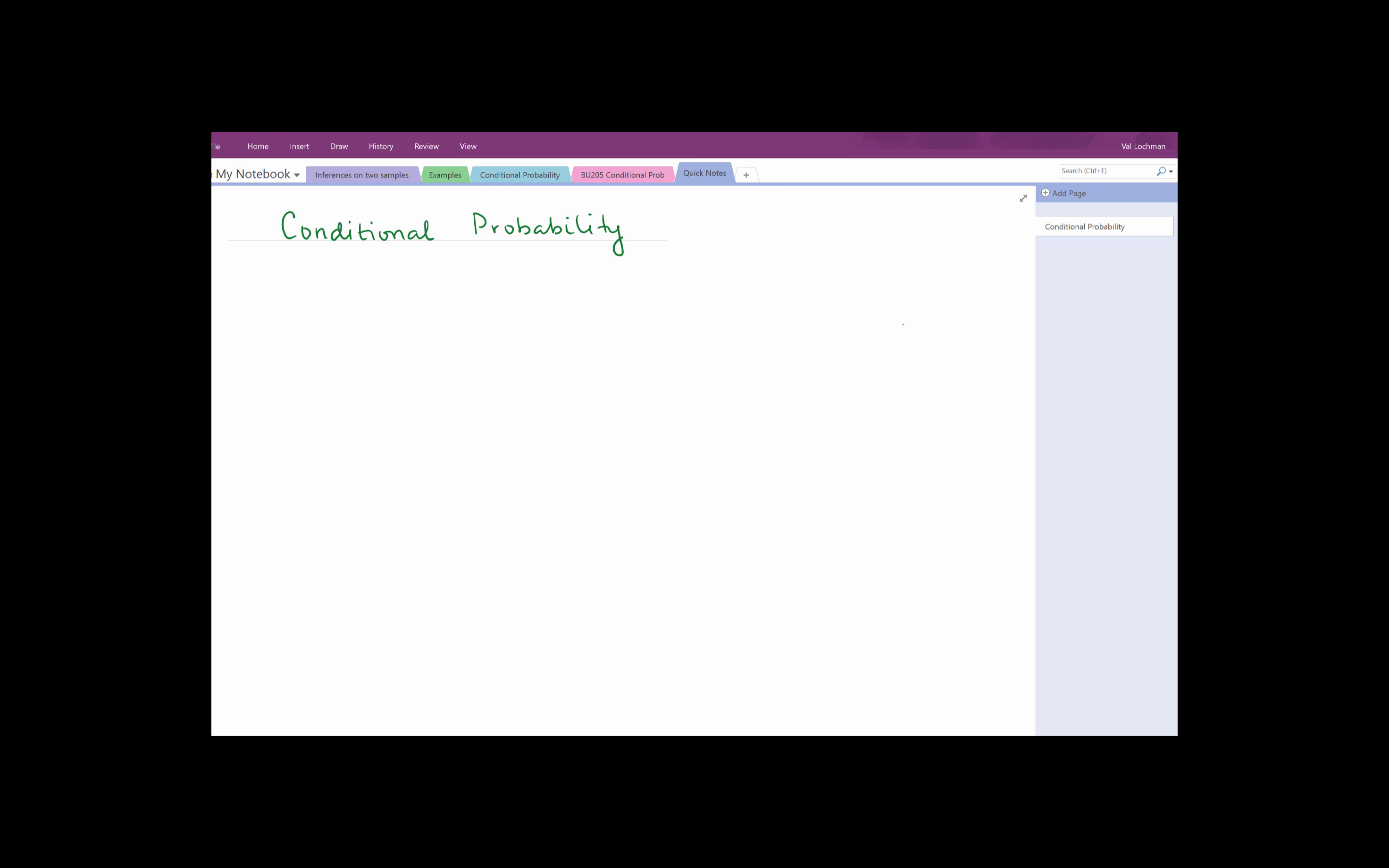Hello everybody and welcome back to Business Statistics Online at Frederick Community College. In this video I will show you how to use conditional probability formula and a decision tree to answer some questions that might be very helpful for activity 5 in your course.